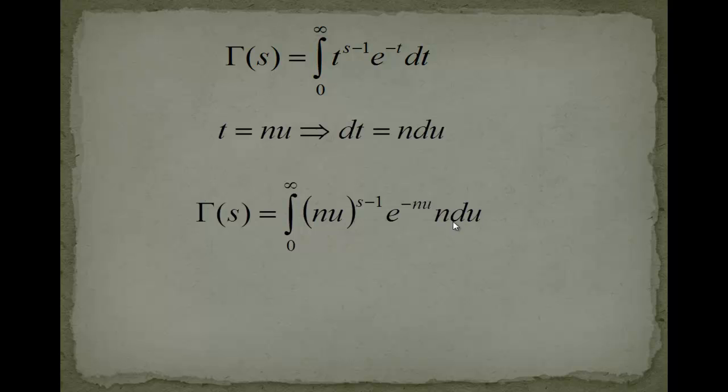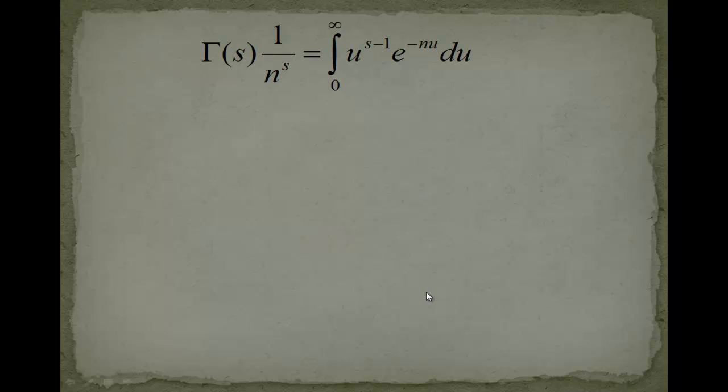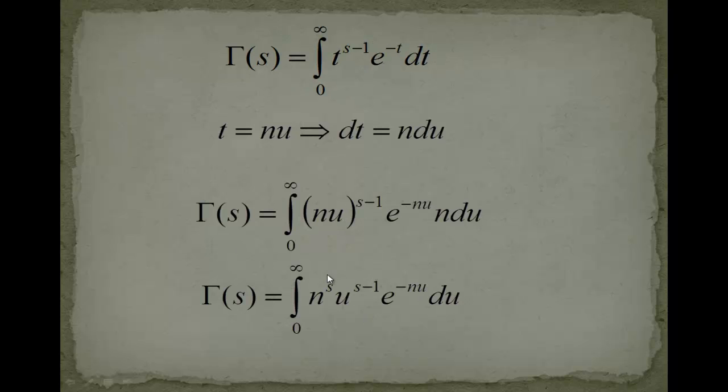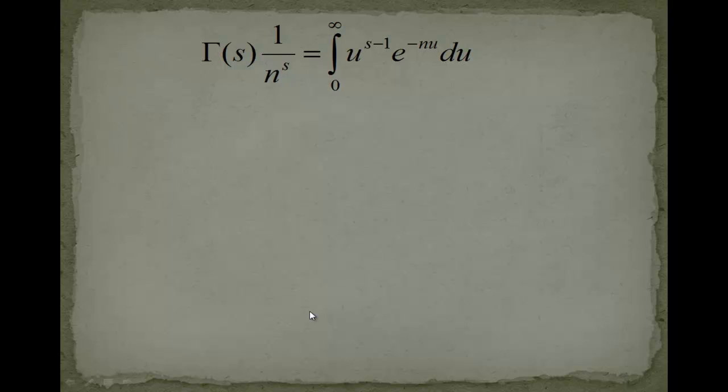We get n u to the s minus 1 multiplied with e to the minus n u multiplied with n du. Now you can see we have n to the s minus 1, but we multiply with n, so we get n to the s here: u to the s minus 1 and e to the minus n u. In the next step, I will divide by n to the s, because n to the s is never zero. We took positive integer numbers for n, so this is never zero.